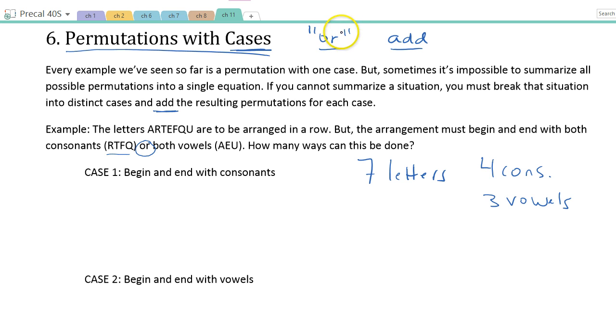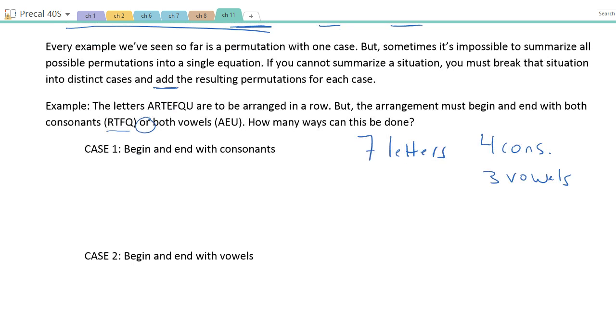So when you see the word OR in there, or when you have to mentally think it's going to be this or that, it's probably a situation where you're going to use cases and then you add each of the cases together. So the two different possibilities, the two cases, is either they're both going to start and end with consonants or they're both going to begin and end with vowels. So we're going to have seven spots.